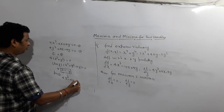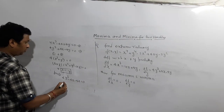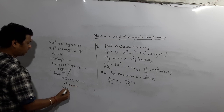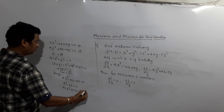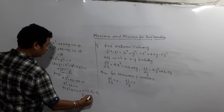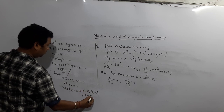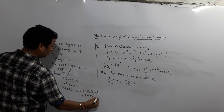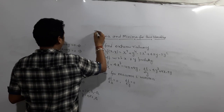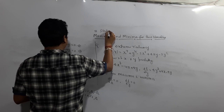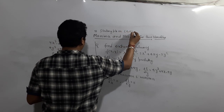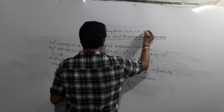Set ∂f/∂x = 0 and ∂f/∂y = 0. So equation 1: 4x³ − 4x + 4y = 0, and equation 2: 4y³ + 4x − 4y = 0. When you add equations 1 and 2, you get 4(x³ + y³) = 0. Using the a³ + b³ factorization formula: (x + y)(x² − xy + y²) = 0.